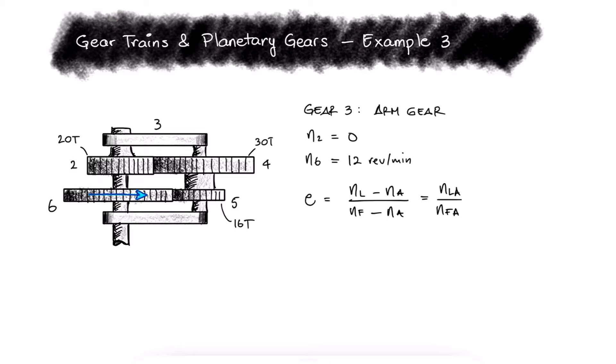And since they're both with respect to the same frame of reference, in this case the arm, that ratio is the same as the speed of the last gear over the speed of the first gear. Additionally, we can define the last and the first gear however we please. If we say that the first gear is gear 2, the last gear would be gear 6.